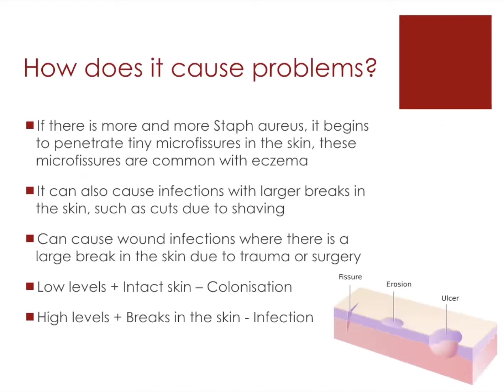How does it cause problems? If there's more and more Staphylococcus aureus present on the skin, it can penetrate tiny microfissures in the skin. These microfissures can be present with conditions such as eczema. Also, larger breaks in the skin due to shaving or minor trauma can allow it to get in. It can also cause wound infections from trauma or surgery. As a general rule: low levels of Staph aureus and intact skin allows colonization, while high levels and breaks in the skin can lead to infection.